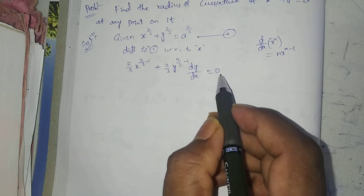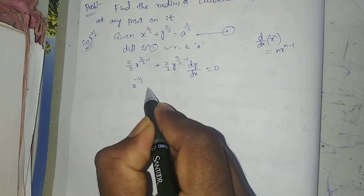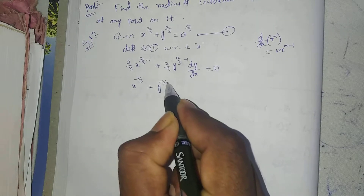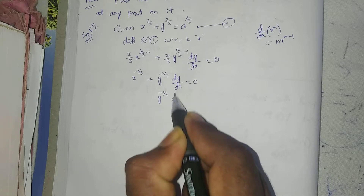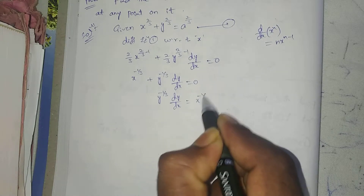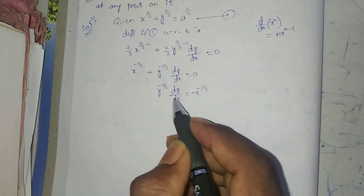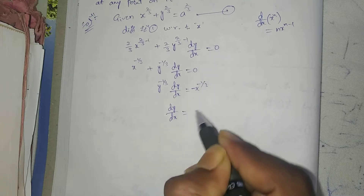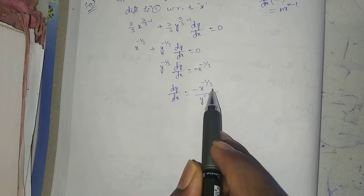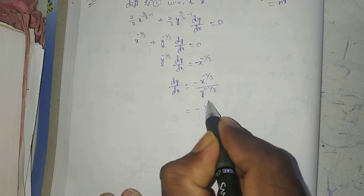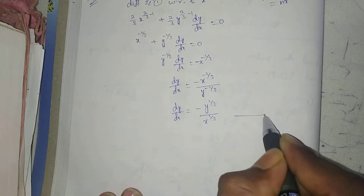Taking 2/3 as common: x^(-1/3) + y^(-1/3)·dy/dx = 0. So y^(-1/3)·dy/dx = -x^(-1/3). Therefore dy/dx = -x^(-1/3) / y^(-1/3) = -y^(1/3) / x^(1/3). This is equation 2.